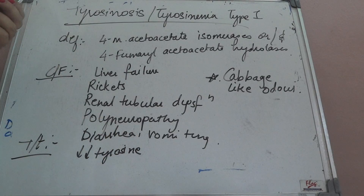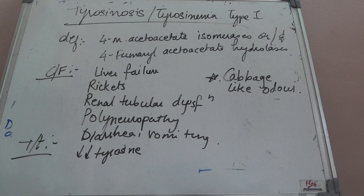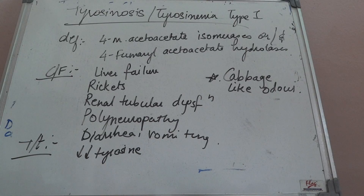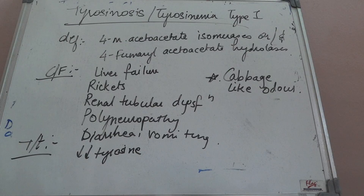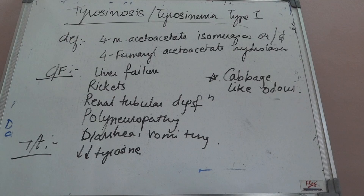So this is all for tyrosine metabolism with its defects. Tyrosine is a non-essential aromatic amino acid that is both glucogenic and ketogenic. The metabolism is important not only for the products formed but also because enzyme deficiencies lead to many kinds of diseases. Thanks for listening. Thank you so much.